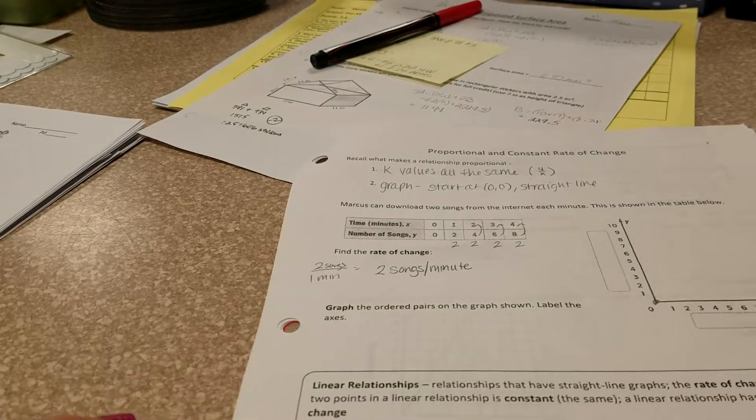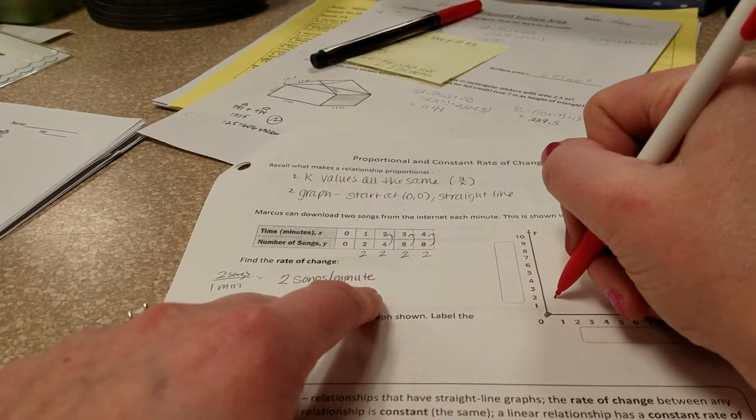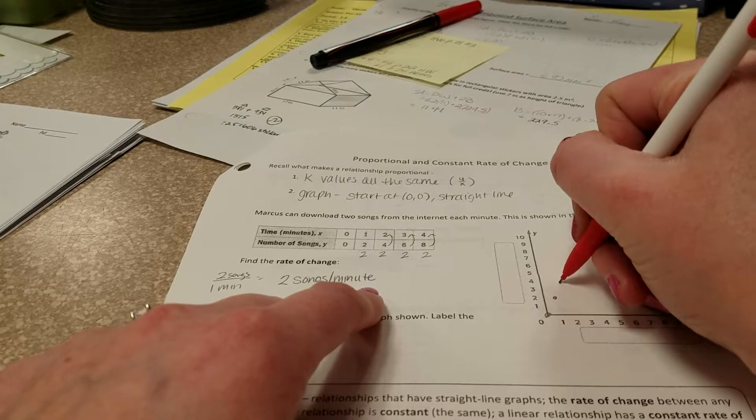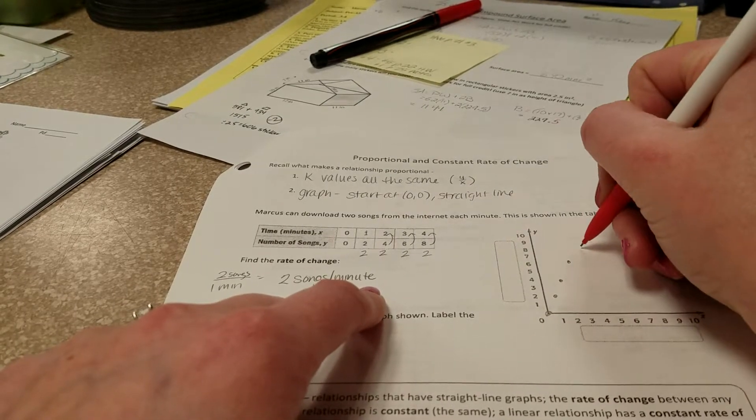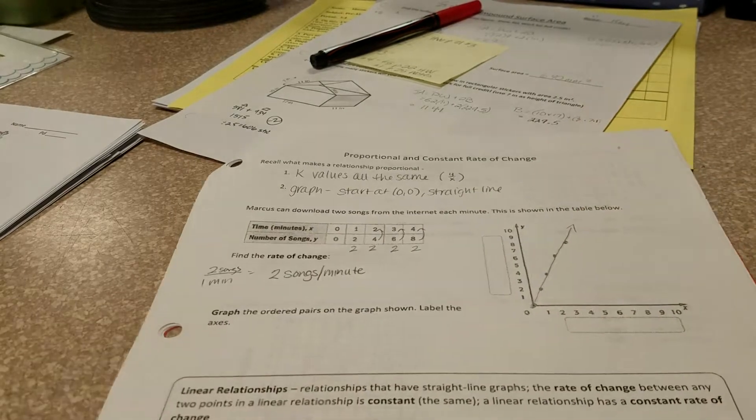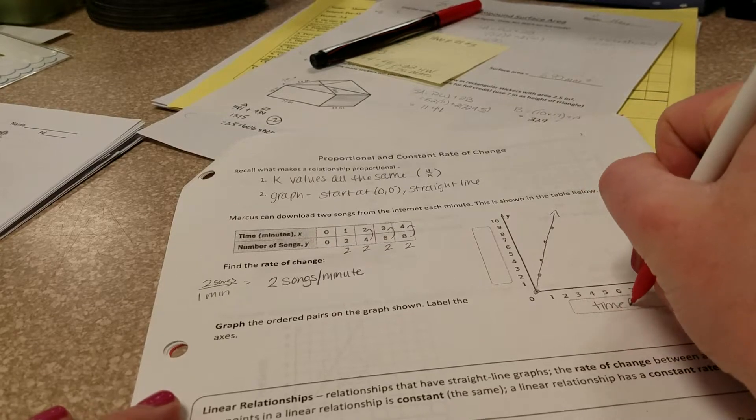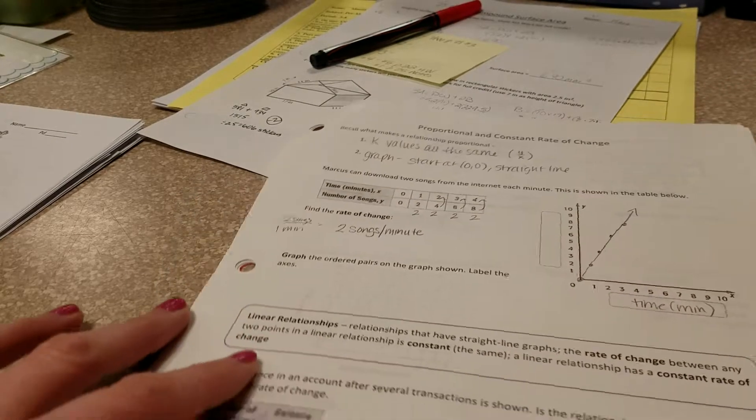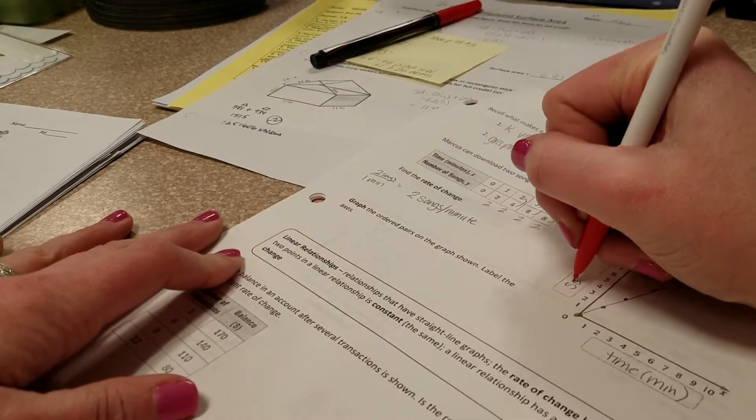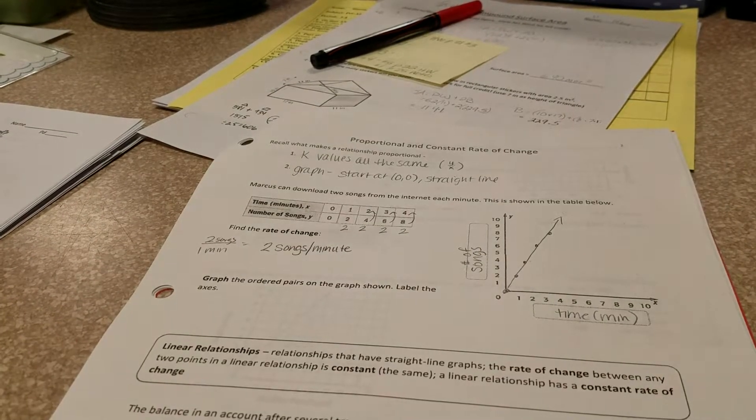So it says graph the ordered pairs on the graph below and then label the axis. So if we have 0,0, we have 1,2, 2,4, 3,6, and 4,8. You're going to notice, yep, we got a straight line here. X values are going to be our time in terms of minutes, and our y values are going to be our number of songs. So there's our first graph.